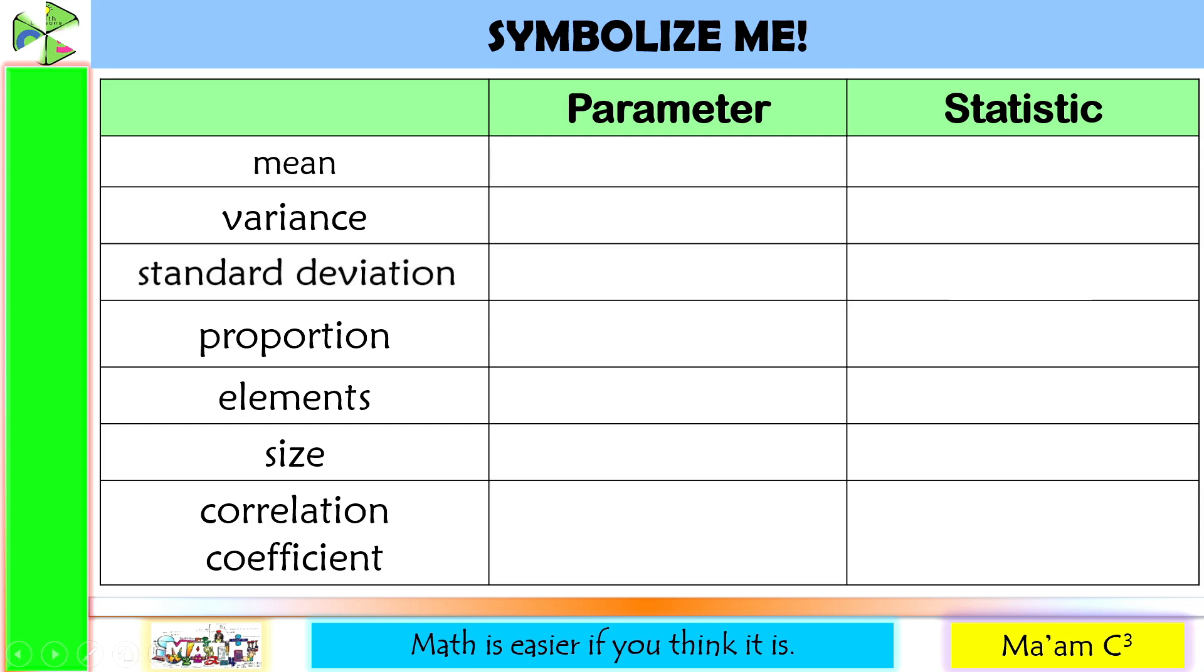Let us also recall the symbols for parameter and statistic for the following that I discussed in one of our lessons before, computing parameter and statistic. For mean, for the parameter, we use the symbol mu. In statistic, we use x bar.